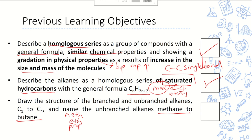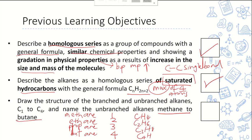The suffix for all alkanes is '-ane'. Methane has one carbon, ethane has two, propane has three, and butane has four. Their molecular formulas are CH4, C2H6, C3H8, and C4H10. As we go down the series, each member differs by a CH2 unit.